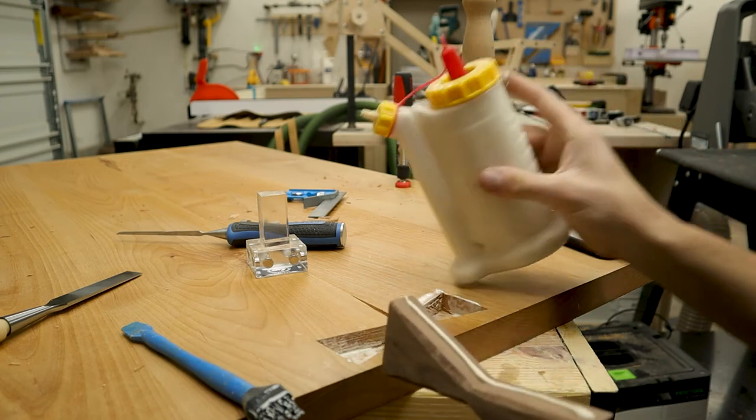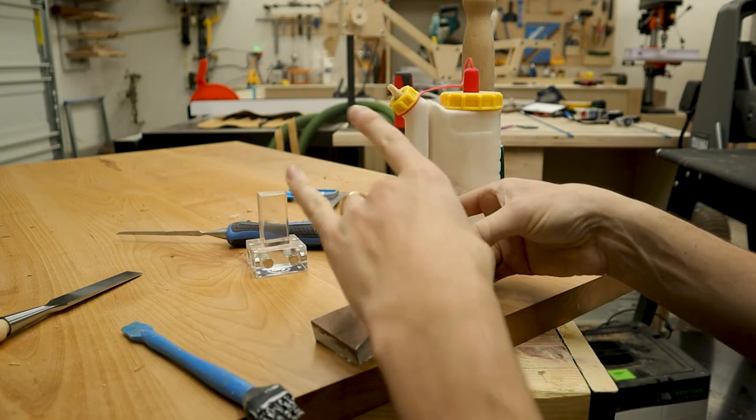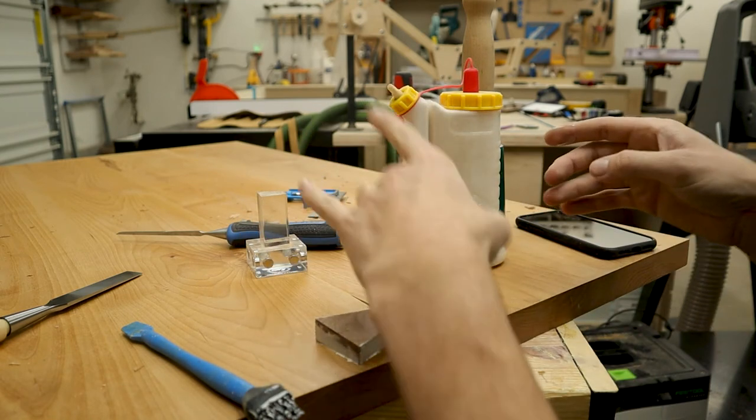Here you can see I put a little chamfer on the bottoms of the bow ties that way if I didn't clear out any of the waste near the bottom, they'll still seat completely.